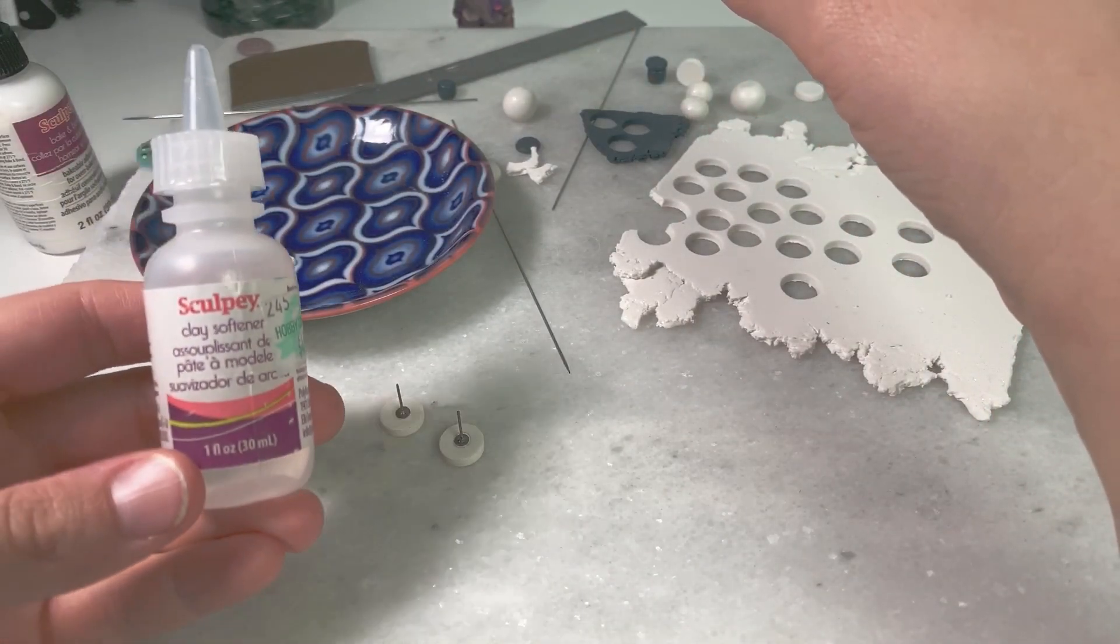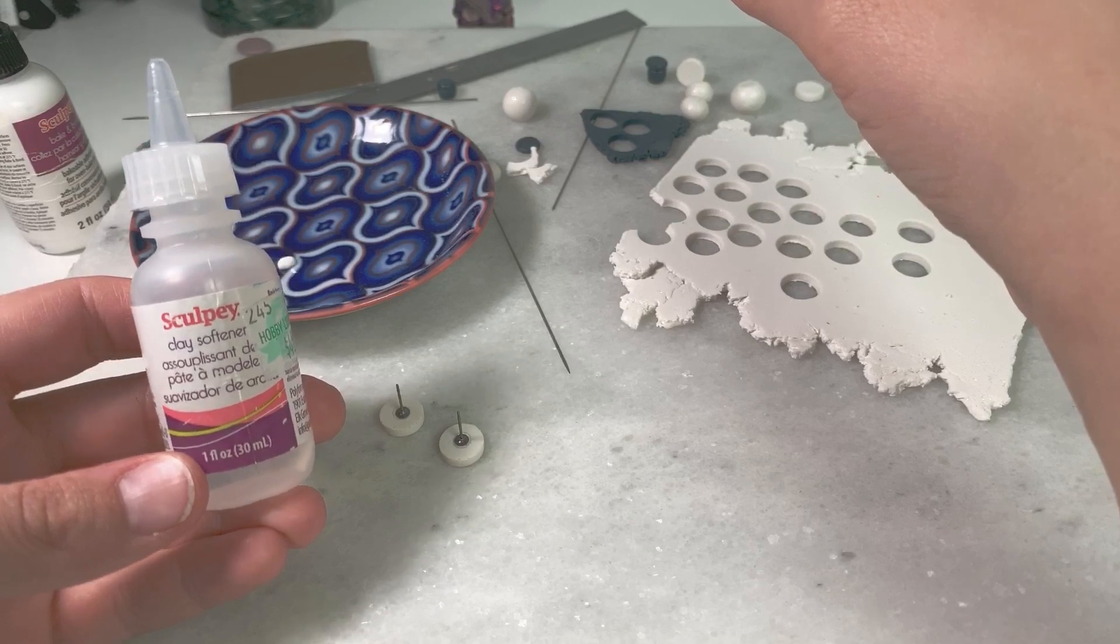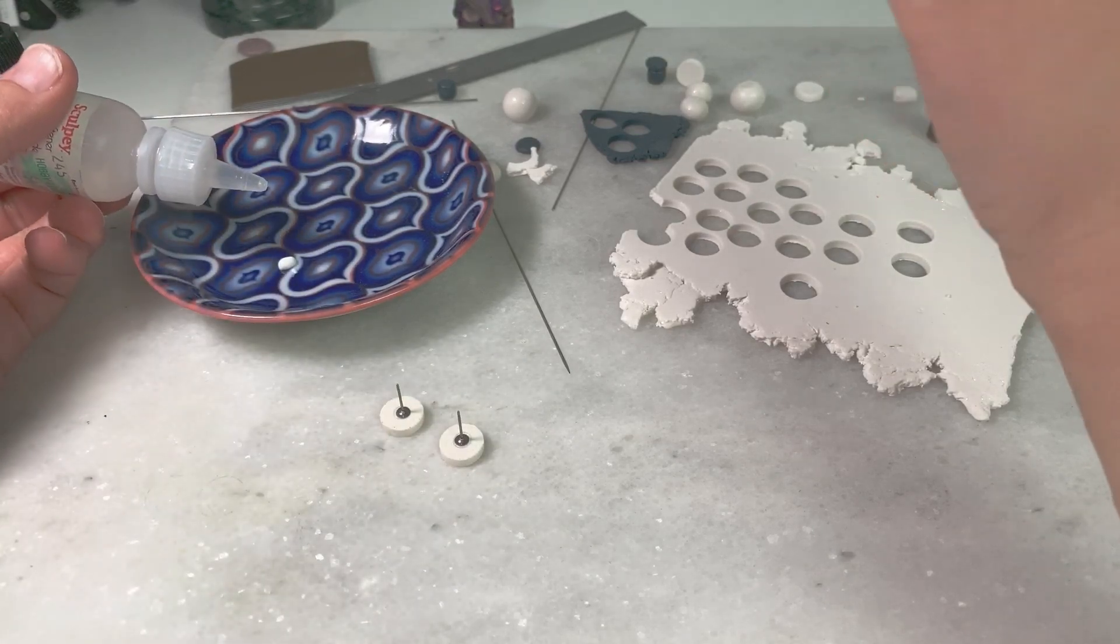Drop of Bake and Bond. Drop of clay softener. I put two or three drops. This thins it out. Makes it much easier to spread.